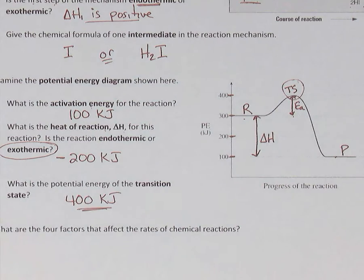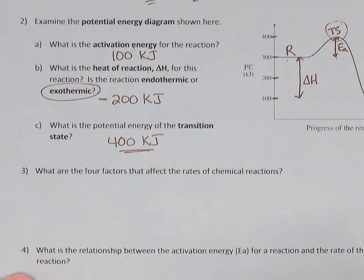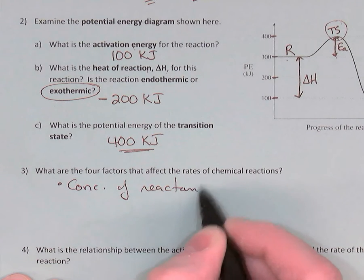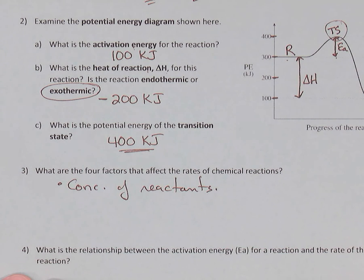What are the four factors that affect the rates of chemical reactions? Try explaining one of them using collision theory. First: the concentration of the reactants. If you increase the concentration, there'll be more particles present, so there'll be more collisions happening — the frequency of collisions increases. With more collisions happening, there'll be more successful collisions, and therefore the rate of the reaction will be faster.